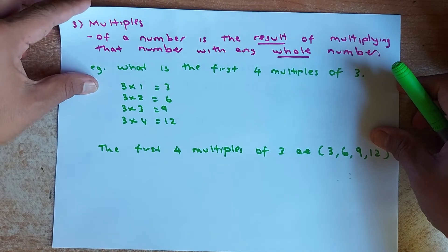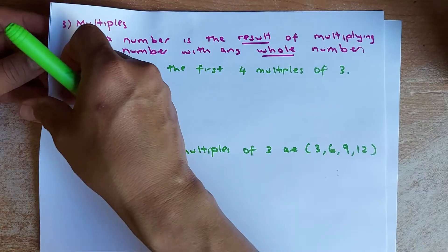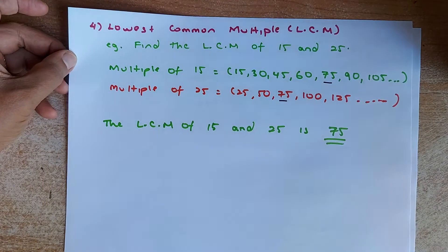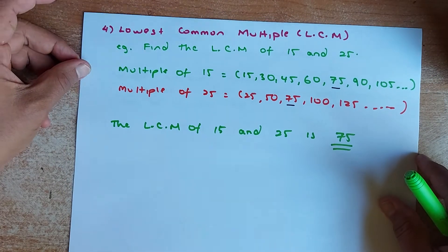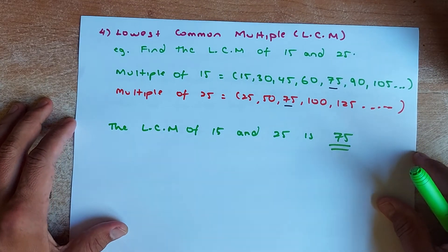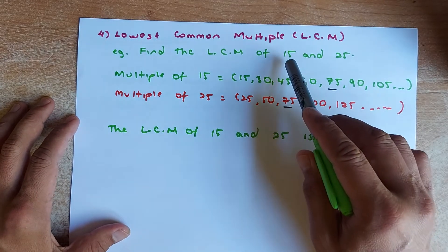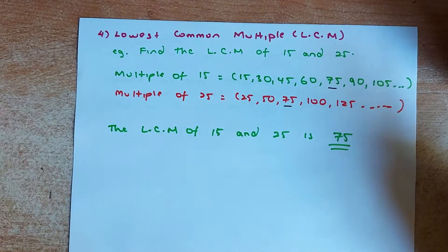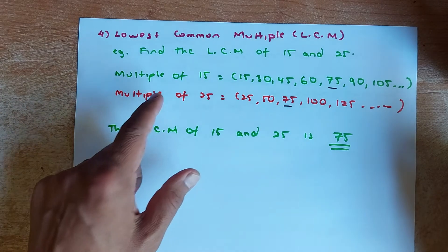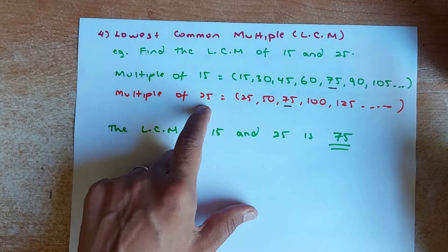Good. Now we're going to know what is the meaning of lowest common multiple. This is very common in mathematics, also called LCM. So if I were to ask you to find LCM between two numbers, 15 and 25, the first thing again you need to find the multiple of 15 and the multiple of 25.